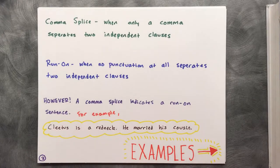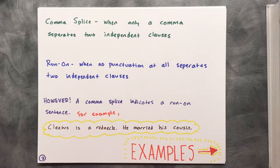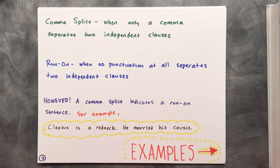A comma splice occurs when only a comma separates two independent sentences, while a run-on sentence occurs when no punctuation at all separates independent sentences.